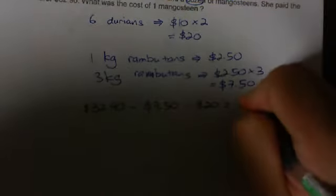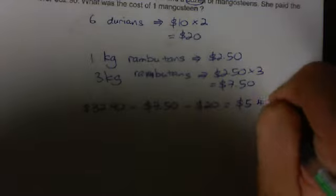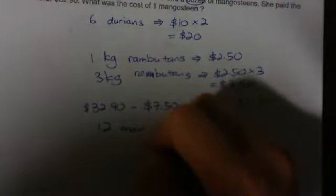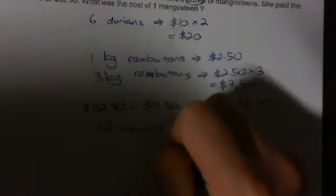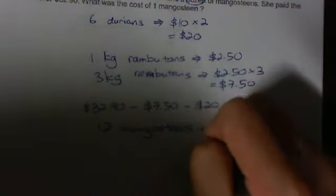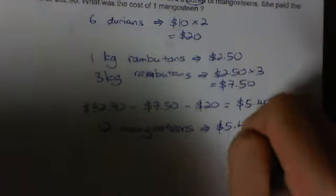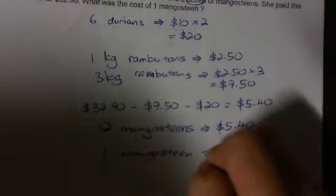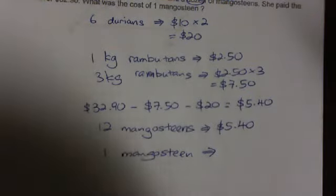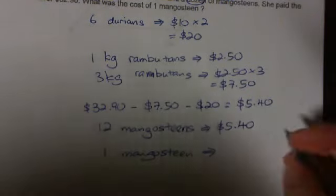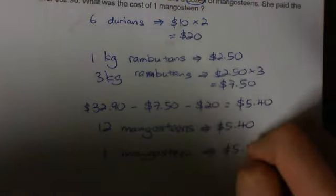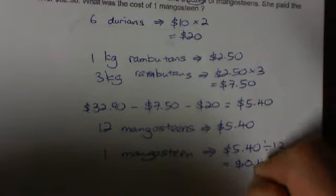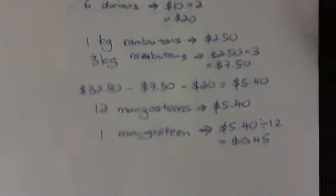$32.90 minus $7.50 minus $20 equals $5.40. Now 12 mangosteen cost $5.40. One mangosteen will cost $5.40 divided by 12, which equals 45 cents. And that's my answer.